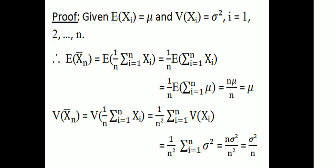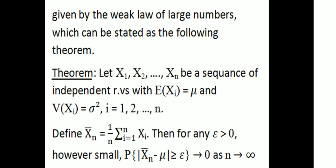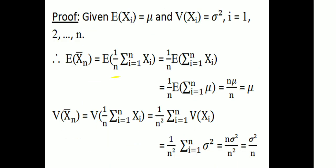We have a sequence of independent random variables with expectation of Xi equal to mu and variance of Xi equal to sigma squared for i = 1, 2, 3, etc. The expectation of Xn bar equals (1/N) times the summation of Xi. Using linearity of expectation, that is (1/N) times the summation of E(Xi), and since each E(Xi) = mu, we get E(Xn bar) = mu.